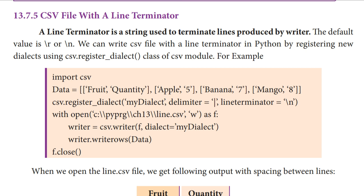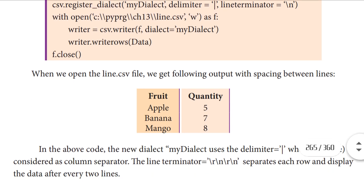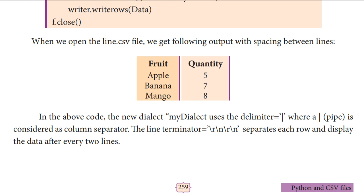Here we use writer.writerows(data). We used writerows because we are writing more than one row into the CSV file. After writing the data, we close the file. When we open the line.csv file in a normal editor, the output displays the data on the next line. The line terminator \r\n separates each row and displays data after every two lines.